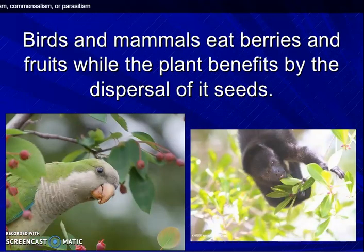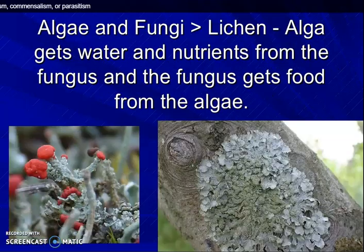Birds and mammals eat berries and fruits, while the plant benefits by dispersal of seeds. Algae and fungi have a close association called lichens. Algae gets water and nutrients from the fungus, and the fungus gets food from the algae. In this way, they have a symbiotic association.